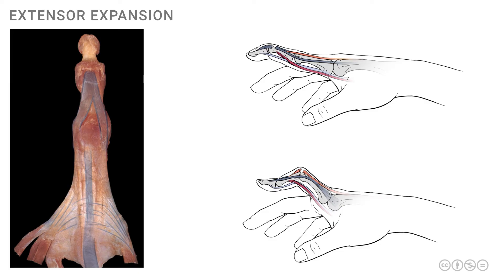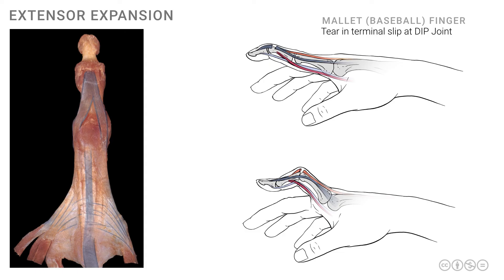Depending on where the extensor expansion might be injured or damaged due to pathology, a number of different clinical presentations are possible. Two of these clinical presentations are seen on the right side of your screen. The mallet finger, or the baseball finger, is a result of the tear in the terminal slip at the DIP joint. Due to forced flexion of the DIP joint, you might have an injury onto the terminal slip.